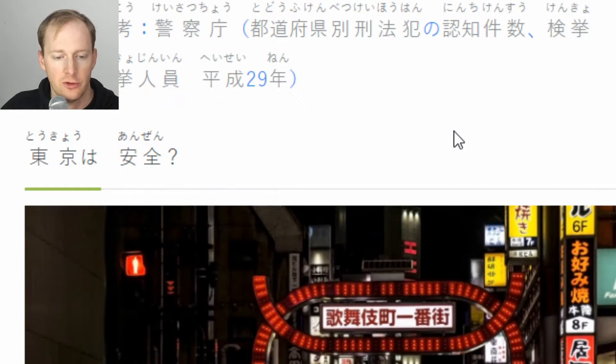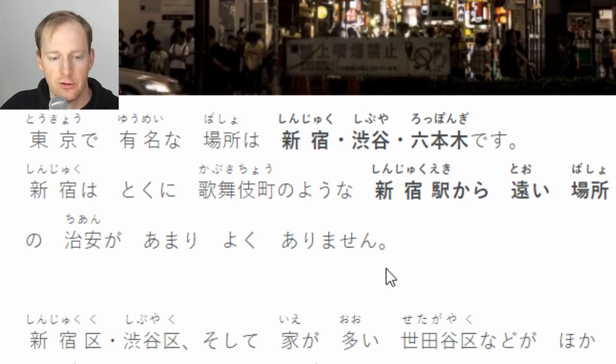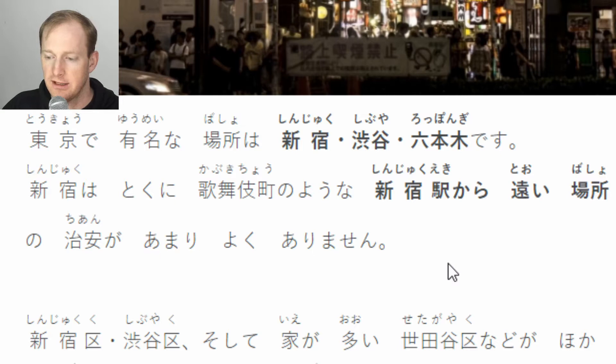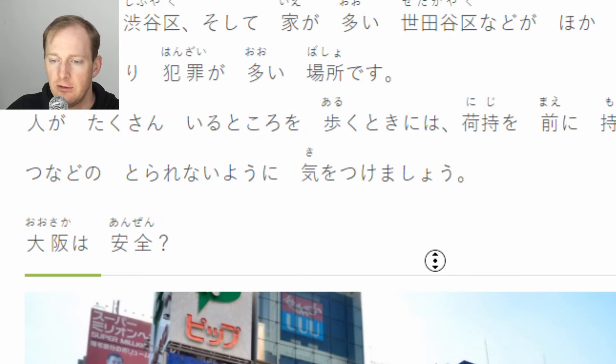東京で有名な場所は、新宿、渋谷、六本木です。新宿は、特に歌舞伎町のような新宿駅から遠い場所の治安があまりよくありません。新宿区、渋谷区、そして家が多い世田谷区などが、他の場所より犯罪が多い場所です。人がたくさんいるところを歩くときには、荷物を前に持つなどの、取られないように気をつけましょう - When walking in crowded areas, take care to hold your belongings in front so they can't be stolen.